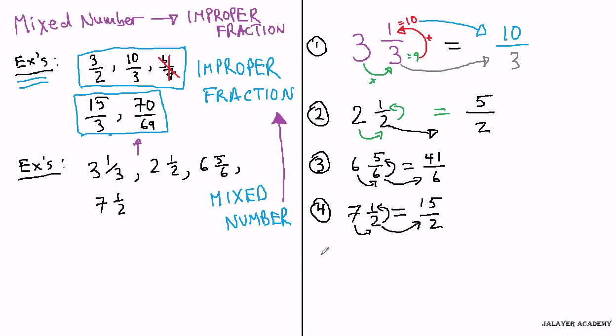Let's fit one more in here. How about 3 and 2 thirds? 3 times 3 is 9 plus 2 is 11 over the original denominator, which is 3. So, we learned how to go from a mixed number to an improper fraction.